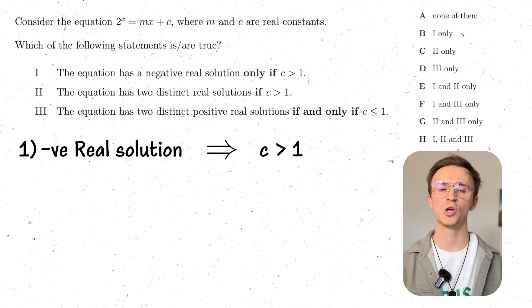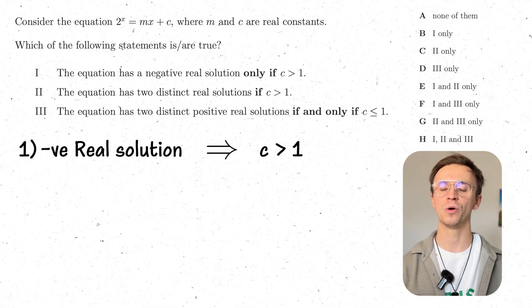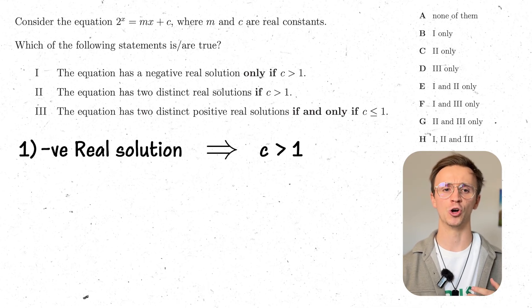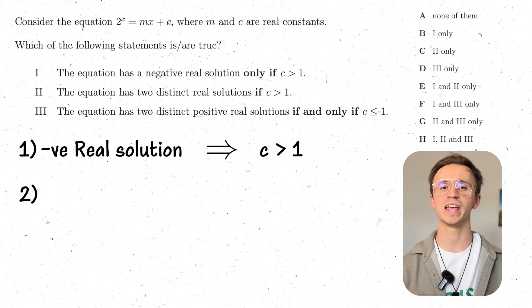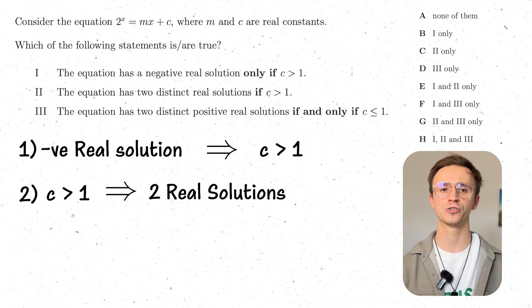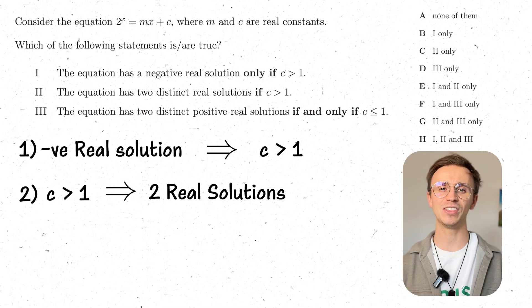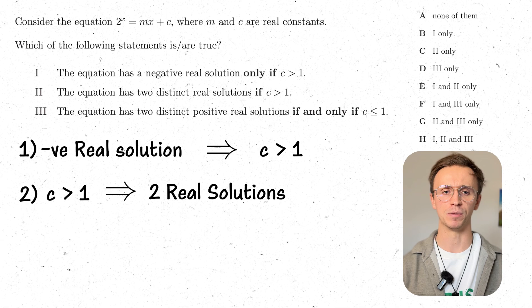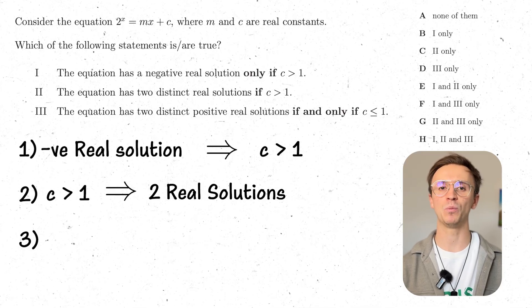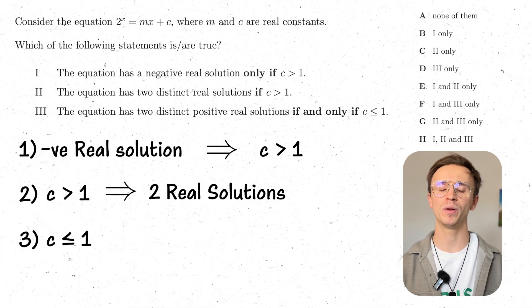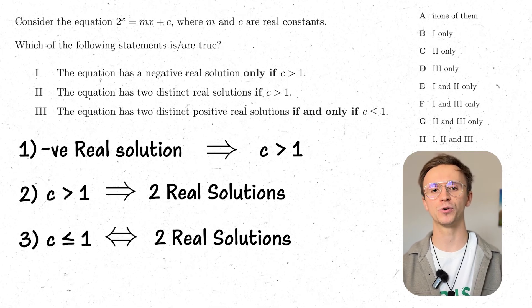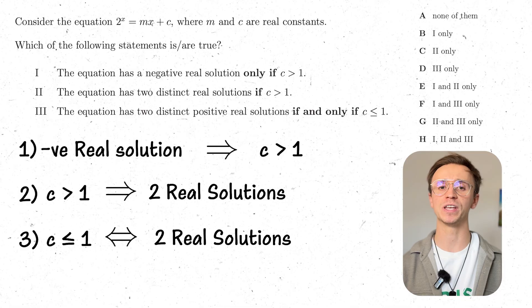Statement two says: the equation has two distinct real solutions if c is greater than one. It's an if statement, so we start from c > 1 and prove two distinct real solutions — c > 1 implies two distinct real solutions. Statement three says: the equation has two distinct real positive solutions if and only if c ≤ 1. For this we need to prove it both ways: assume c ≤ 1 and prove two distinct real solutions, and assume two distinct real positive solutions and prove c ≤ 1. We can disprove any of these with a counterexample.